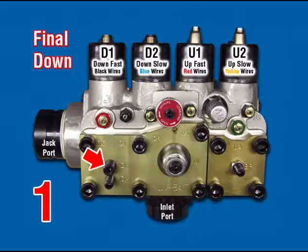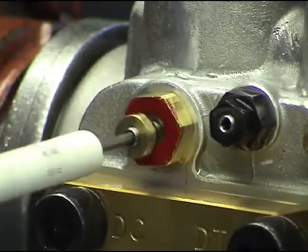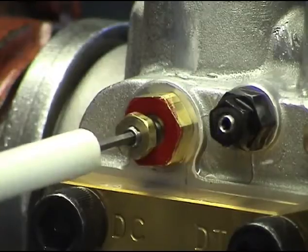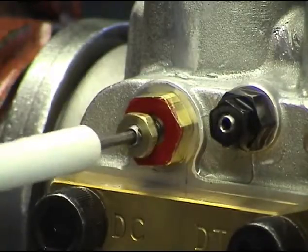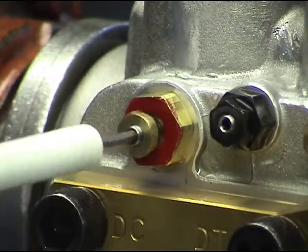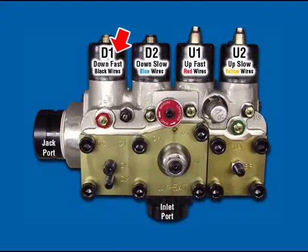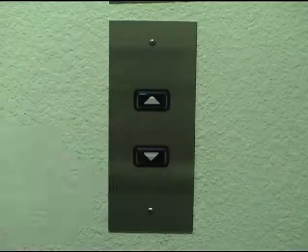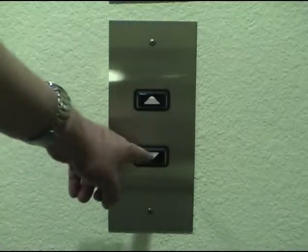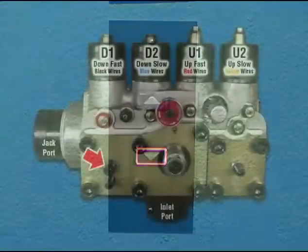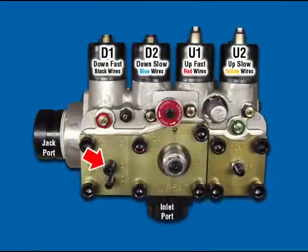DL — down leveling. Car at upper floor with no load. Turn DC clockwise eight and a half turns from fully open position. Disconnect D1. Register a down call. Adjust DL to set down leveling speed at seven to nine feet per minute.